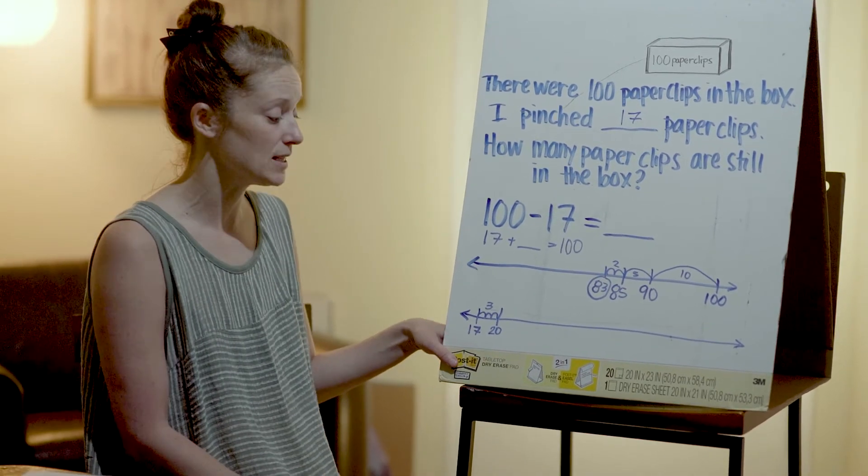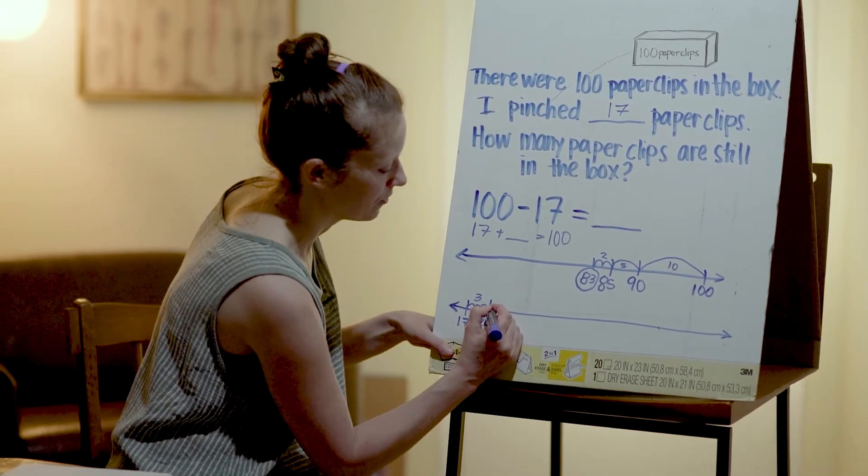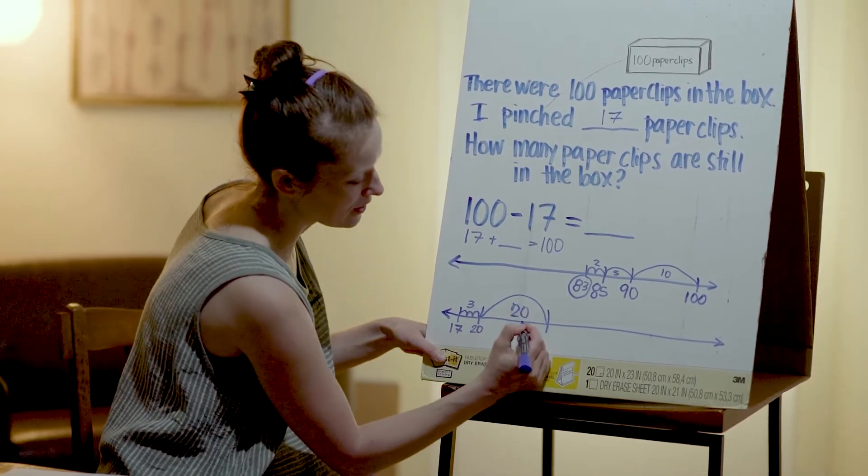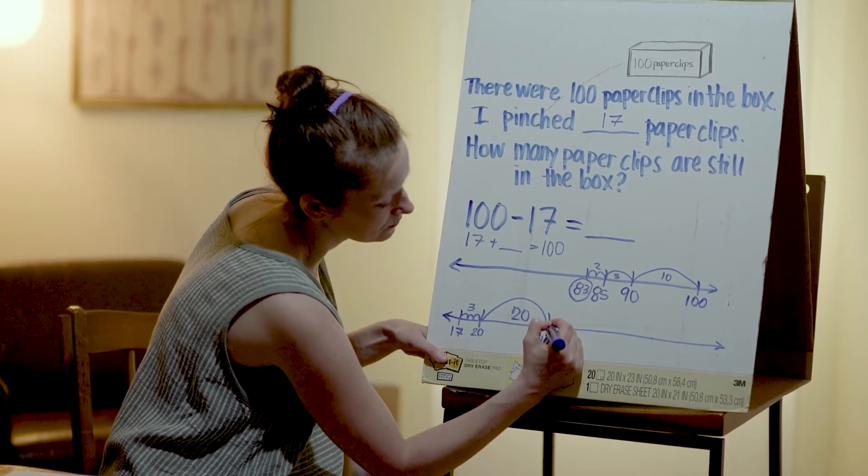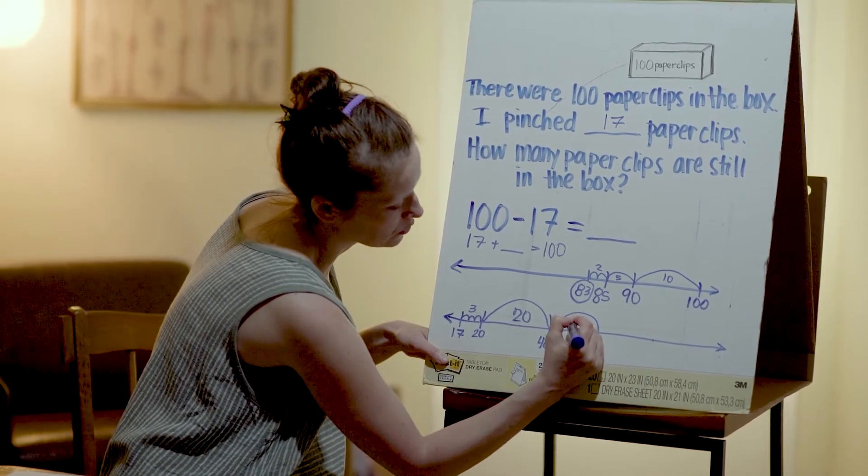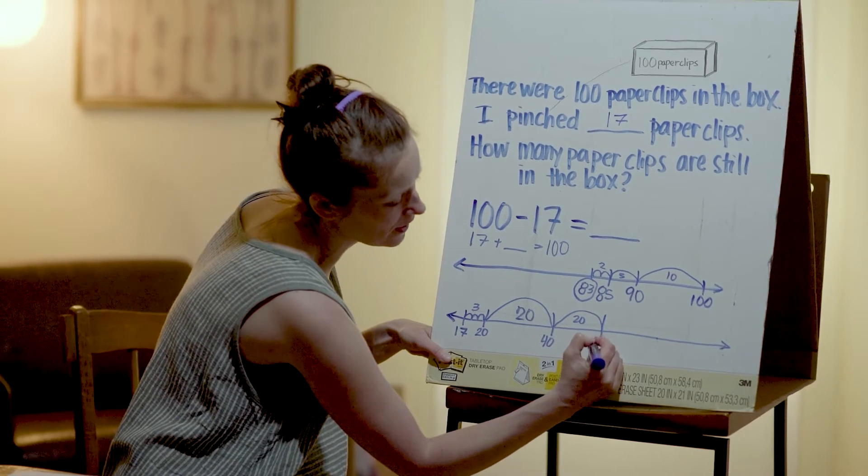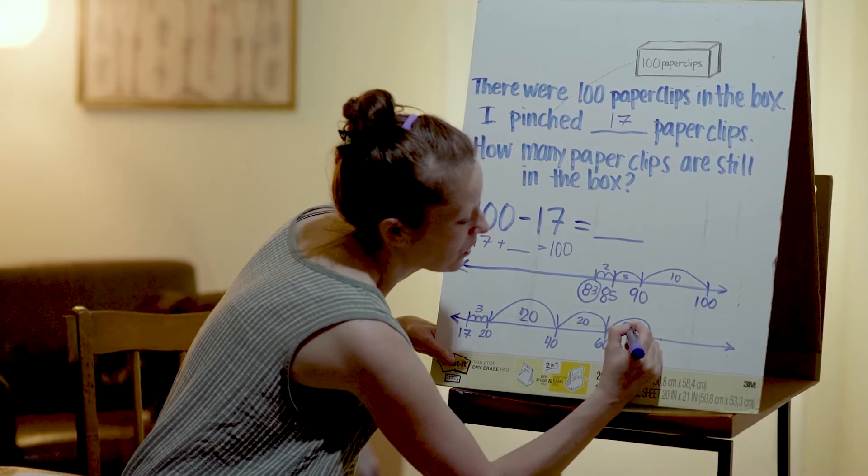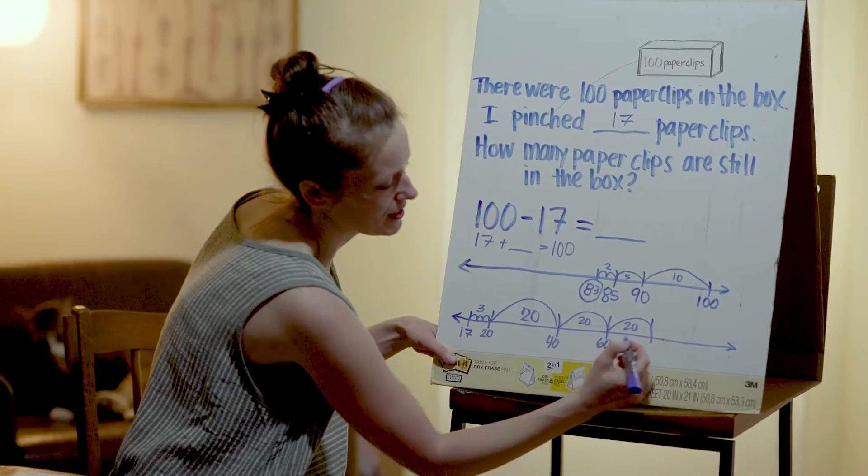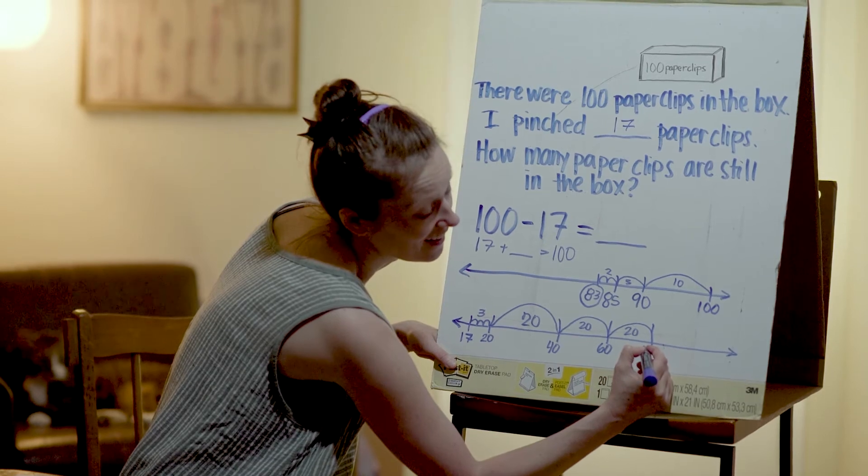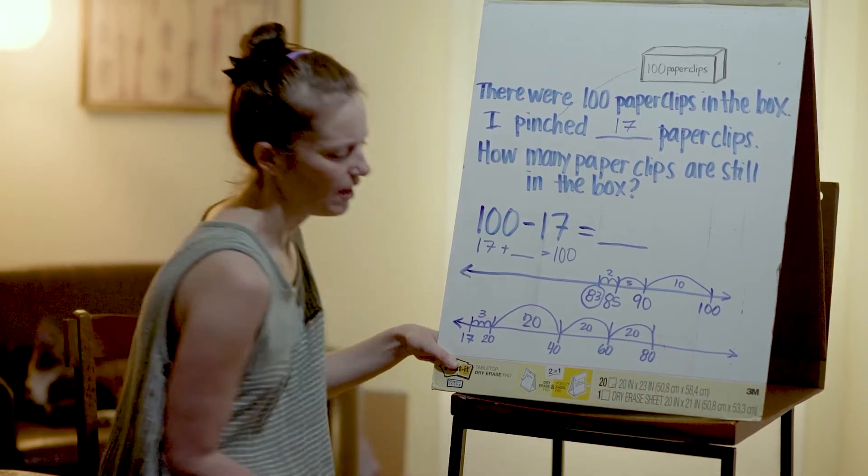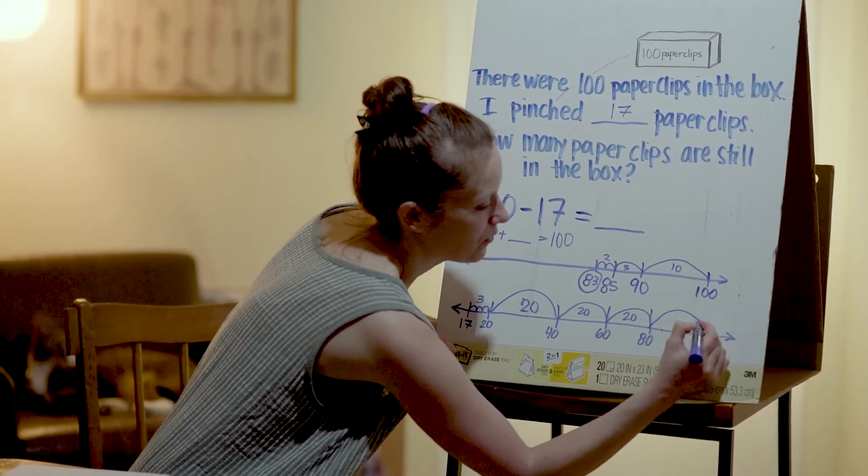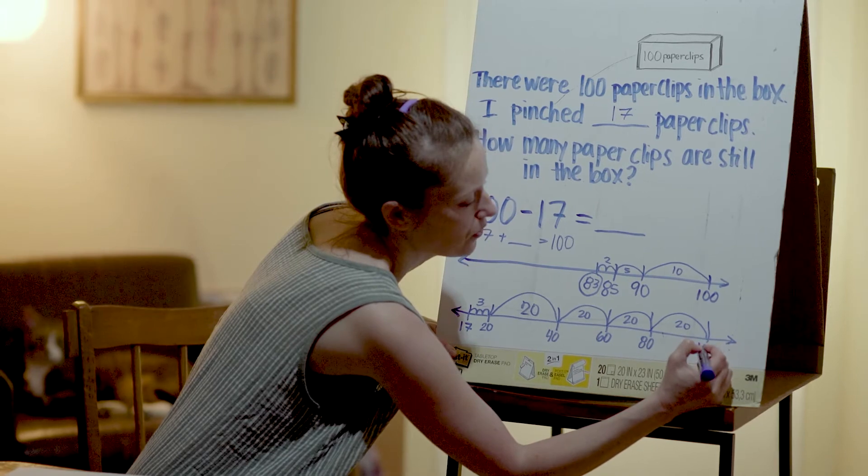So I'm going to try jumping from 20 here until I get to 100. So I'm going to jump 20. 20 plus 20 more, I get to 40. And then I'm going to jump 20 more. And from 40, 20 more, I get to 60. Another 20. 60 plus another 20, and I get to 80. How many more do I need to jump? I need to jump 20 more, right? So one more jump of 20, and I get to 100.